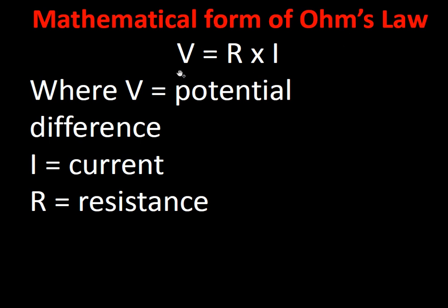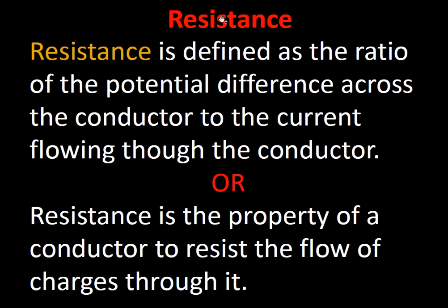The mathematical form of Ohm's Law: voltage is directly proportional to resistance. The formula is V = R × I, where V is the potential difference in volts, I is the current in amperes, and R is the resistance measured in ohms.